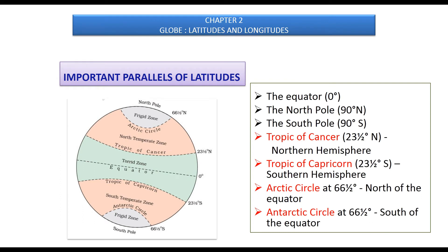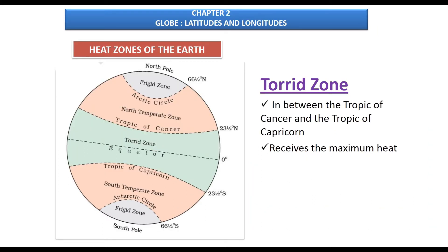Important parallels of latitudes: the equator is at zero degrees (the baseline), the north pole at 90 degrees north, and the south pole at 90 degrees south. Besides these, there are four other important parallels: in the northern hemisphere, the Tropic of Cancer at 23.5 degrees north; in the southern hemisphere, the Tropic of Capricorn at 23.5 degrees south; the Arctic Circle at 66.5 degrees north; and the Antarctic Circle at 66.5 degrees south.